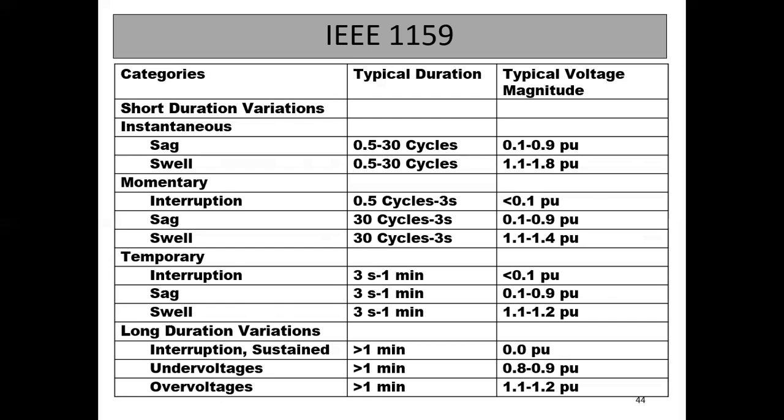Voltage swell has the same duration — from 0.5 cycle to 30 cycles, less than one second — but the voltage increases. It is called voltage swell. The magnitude of voltage swell is 1.1 to 1.8 per unit, that is 110 to 180 percent of the rated voltage.